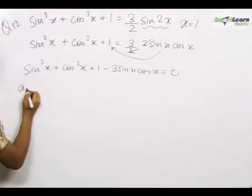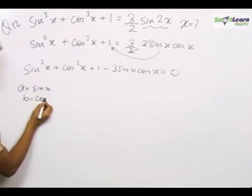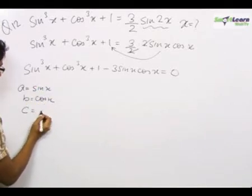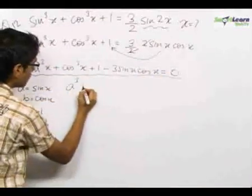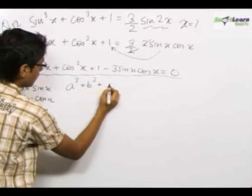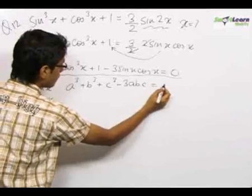Now, if we take a equals sinx, b equals cosx, c equals 1, then this equation is of the form a³ + b³ + c³ - 3abc = 0.